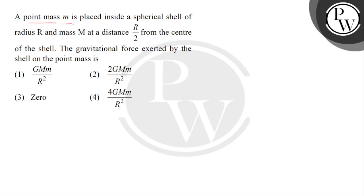A point mass M is placed inside a spherical shell of radius R and mass M at a distance R by 2 from the center of the shell. The gravitational force exerted by the shell on the point mass is.